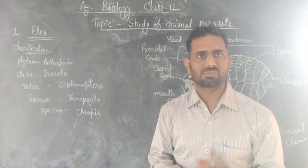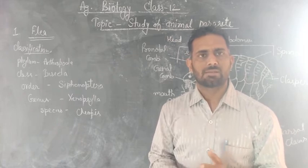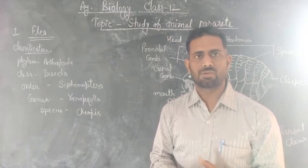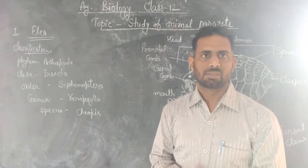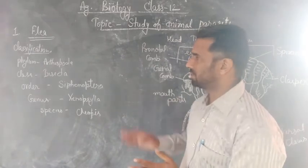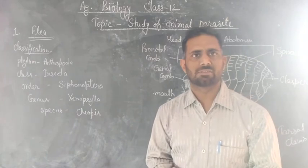The four animal parasites are: first is flea, second is leech, third is liver fluke, and fourth is ascaris. So first of all we study the first parasite — fleas.